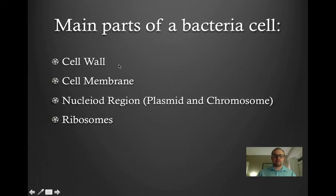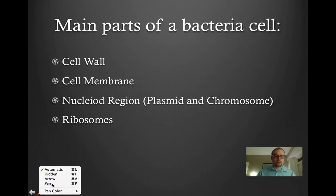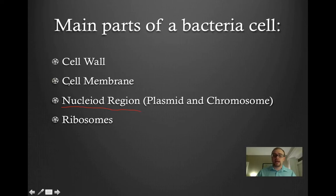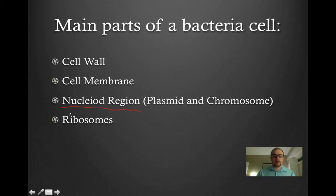The main parts of a bacterial cell: bacteria have a cell wall, which is a little different than the cell wall found in plants. They also have a cell membrane, and they have what's called the nucleoid region — the region in the bacterial cell that contains the genetic material. They do not have distinct membrane-bound organelles, but they do have this nucleoid region, which contains genetic material in the form of a plasmid or a chromosome. Bacteria, like all living cells, also have ribosomes, which are very important for the production of proteins.